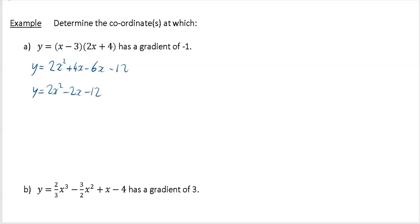We know this thing has a gradient of minus 1 at some point, so it mentions gradient. If it mentions gradient you have to think about your gradient function which is dy/dx. So differentiate your y to get 4x minus 2, and then what we want to do is put your dy/dx equal to minus 1.